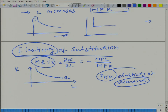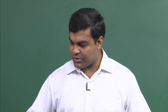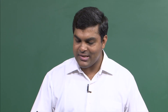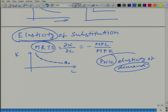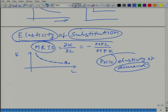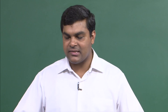What we are talking about here is elasticity of substitution — not price elasticity, but some sort of elasticity of substitution. How does the proportional substitution change as the proportional price changes in the market? Since we do not have proportional price directly, what do we use as a proxy? We use MRTS. So the proportional change in substitution with respect to proportional change in MRTS is the elasticity of substitution.